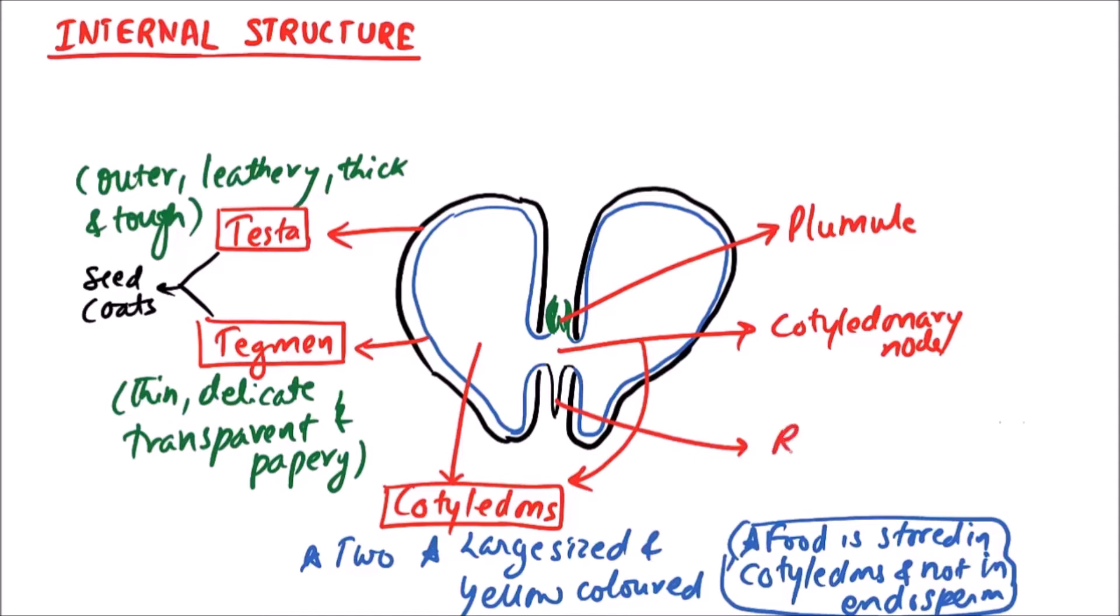Radicle, which gives rise to future root. And the part of embryonic axis between plumule and cotyledonary node is known as epicotyl. While the part between radicle and cotyledonary node is known as hypocotyl.